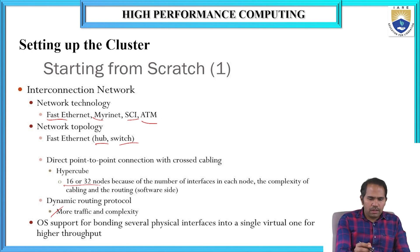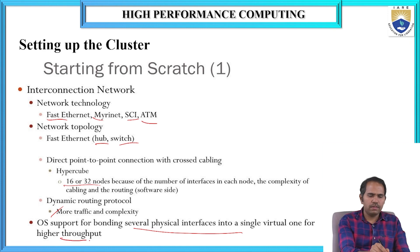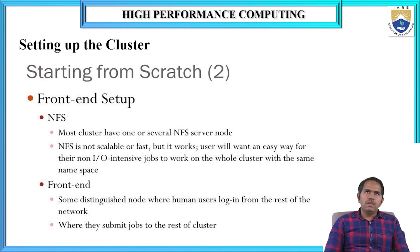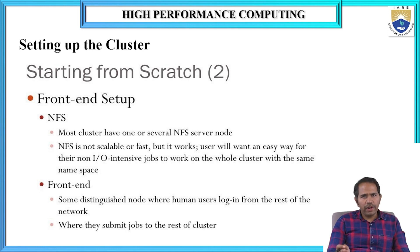Operating system support for binding several physical interfaces into a single virtual one for higher throughput. This is the outline of this slide on interconnection networks — how the interconnection network has to be formed. For this, we have to create it with front-end systems. The front-end systems have to be created with file transfer and logins — user logins to access the cluster systems and file transfer. For that, we have to use a front-end setup.